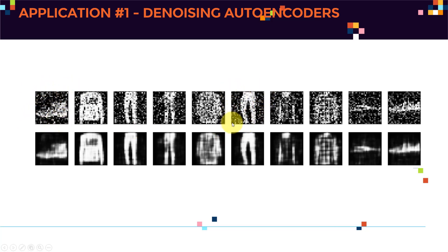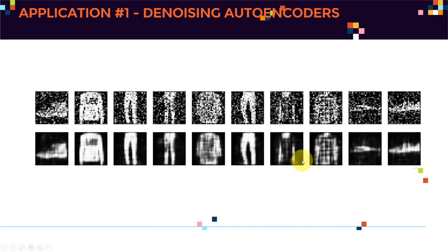These are the inputs to our autoencoder — a bunch of heavily noisy images. And here is the output: the autoencoder has been able to remove the noise and generate clean outputs. The resolution has deteriorated a little bit, which depends on the number of neurons in the layers, hidden layers, and code layer, as well as the activation functions used.